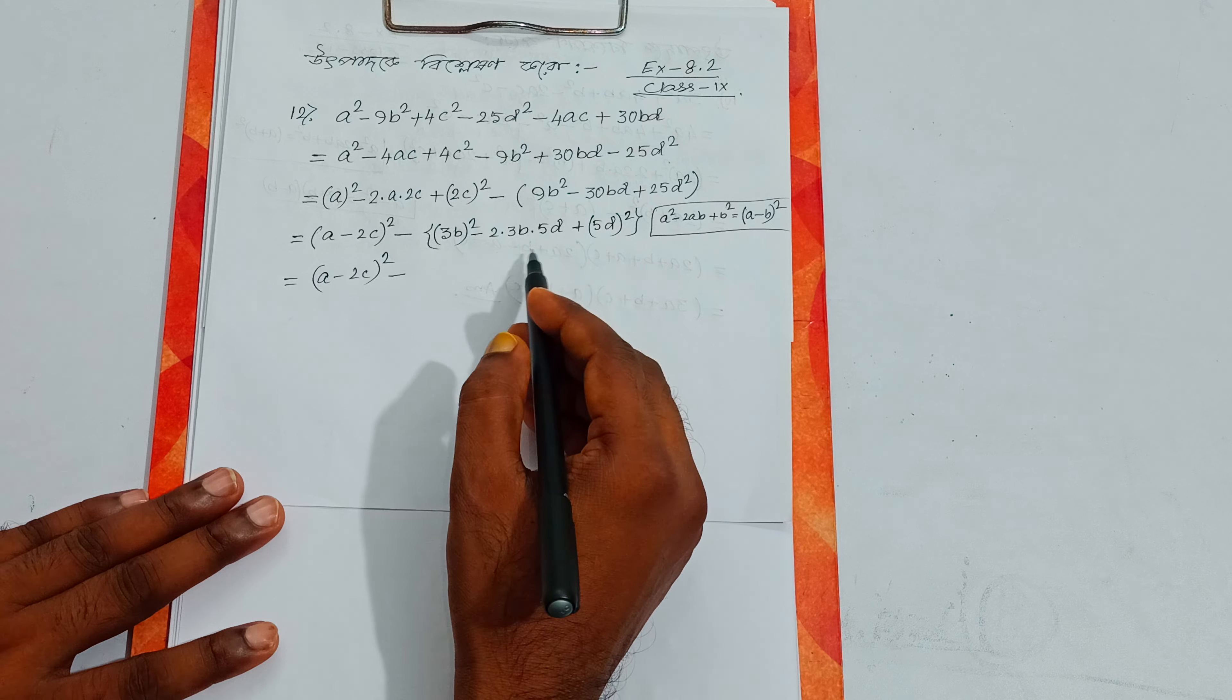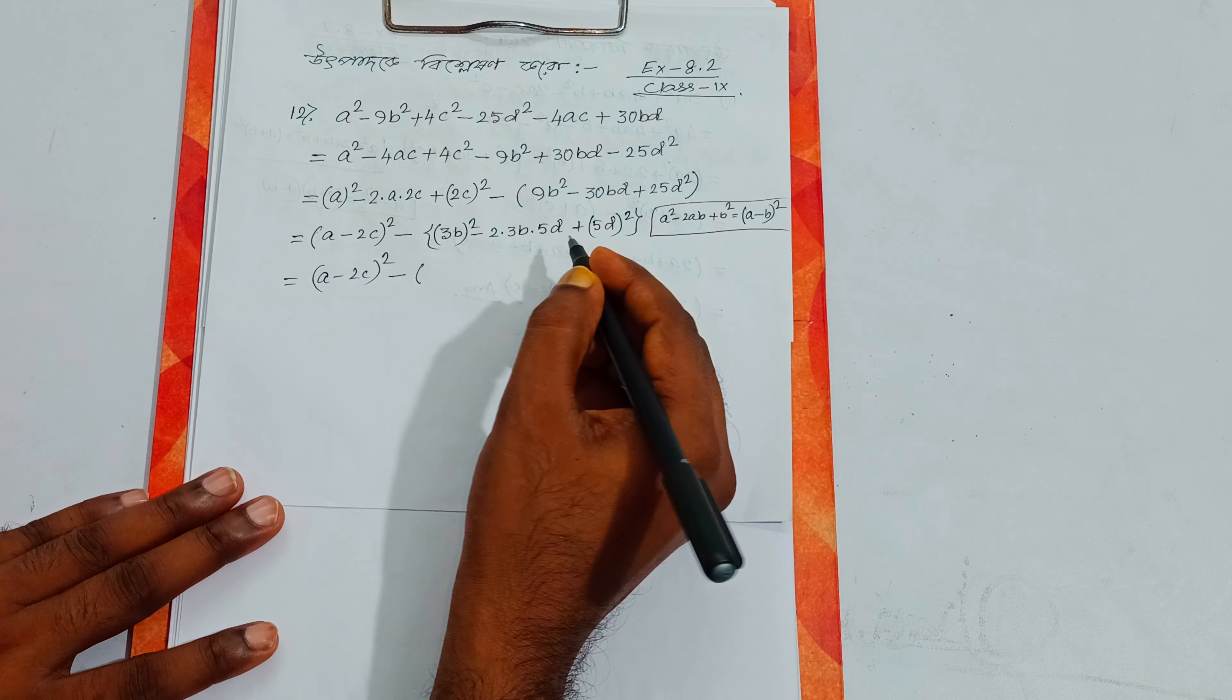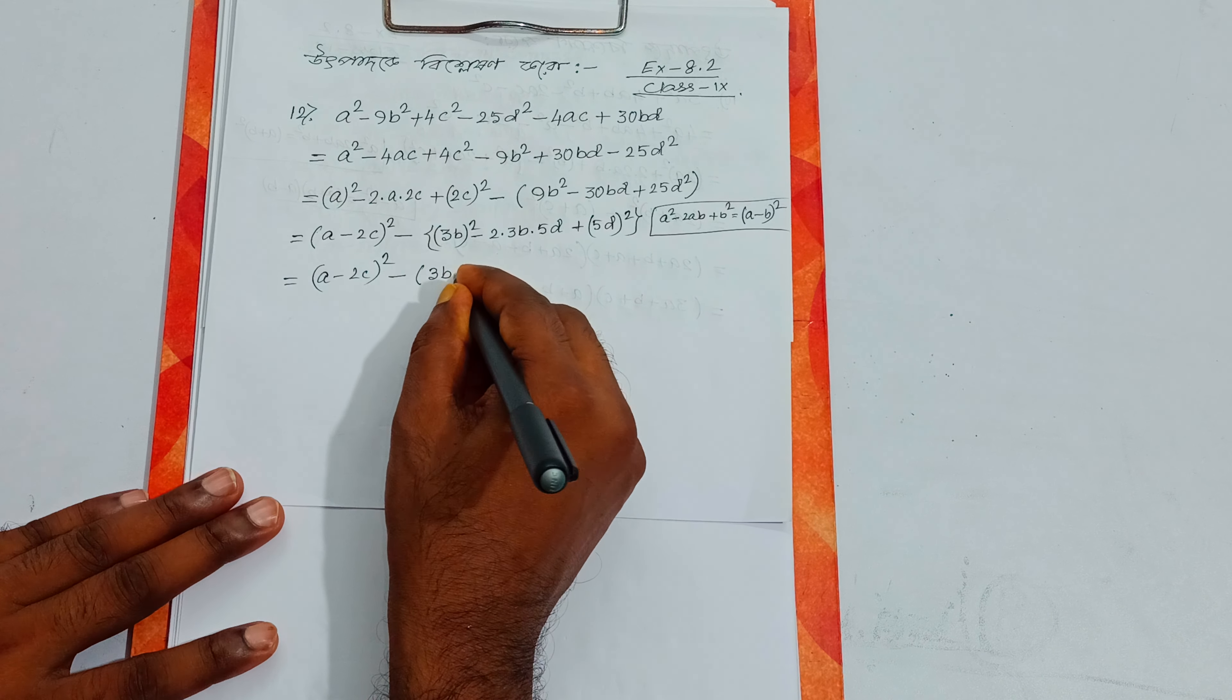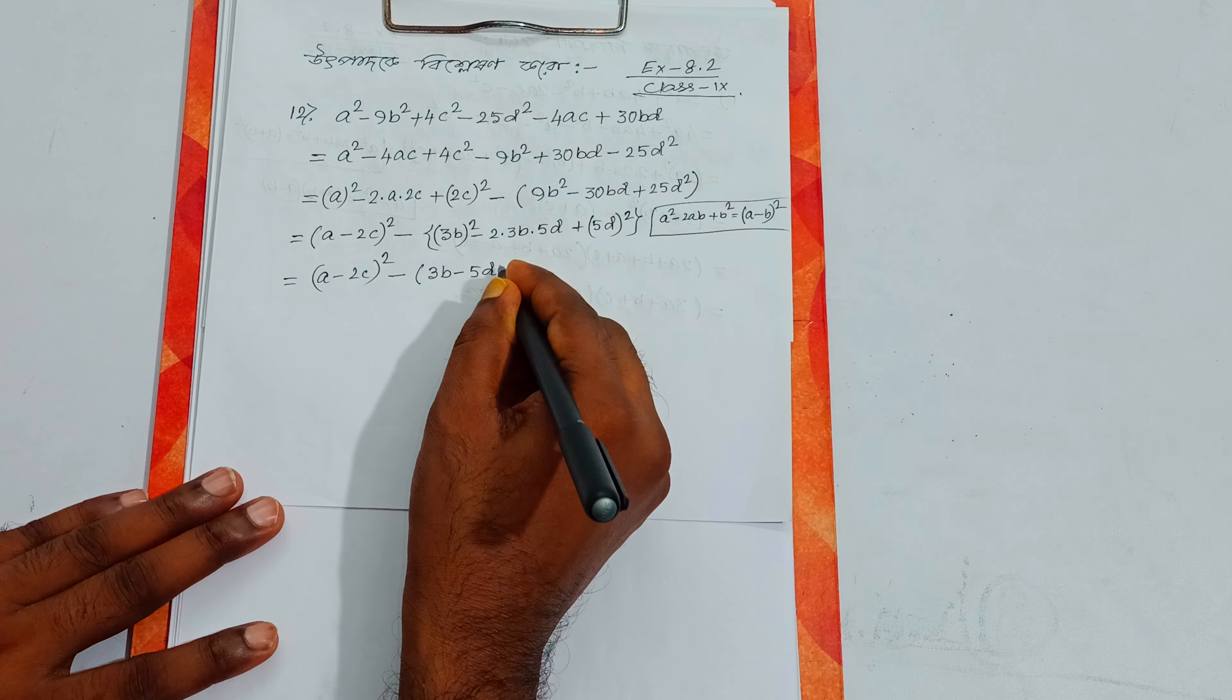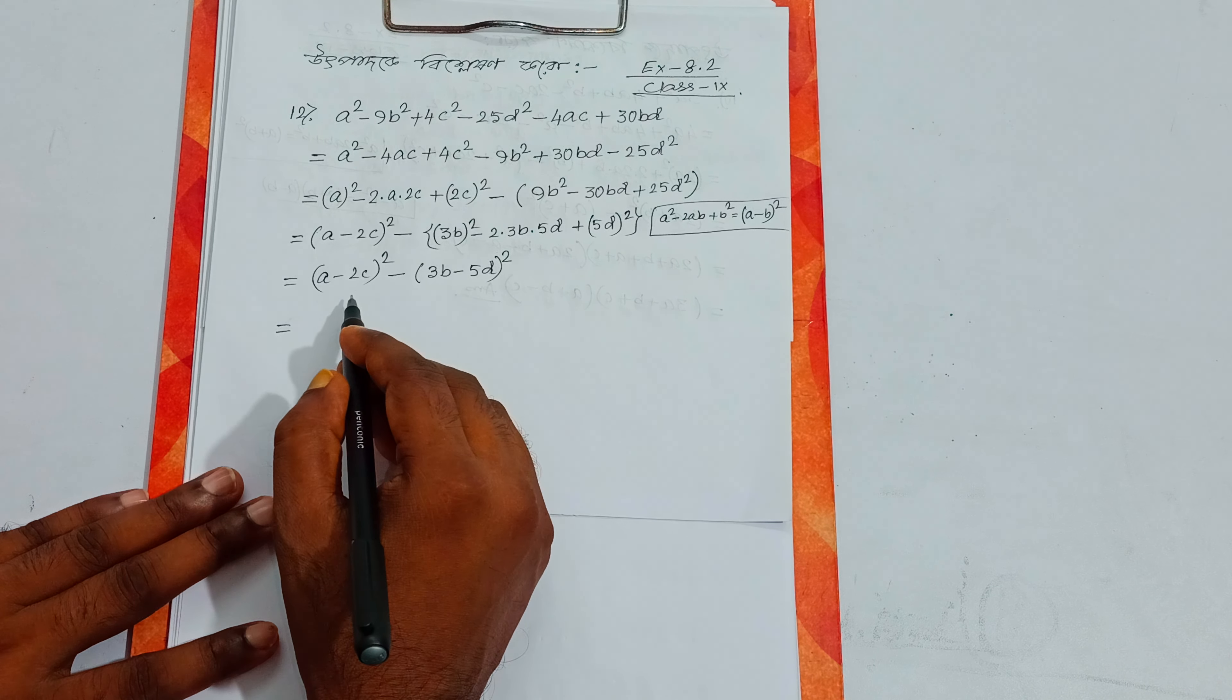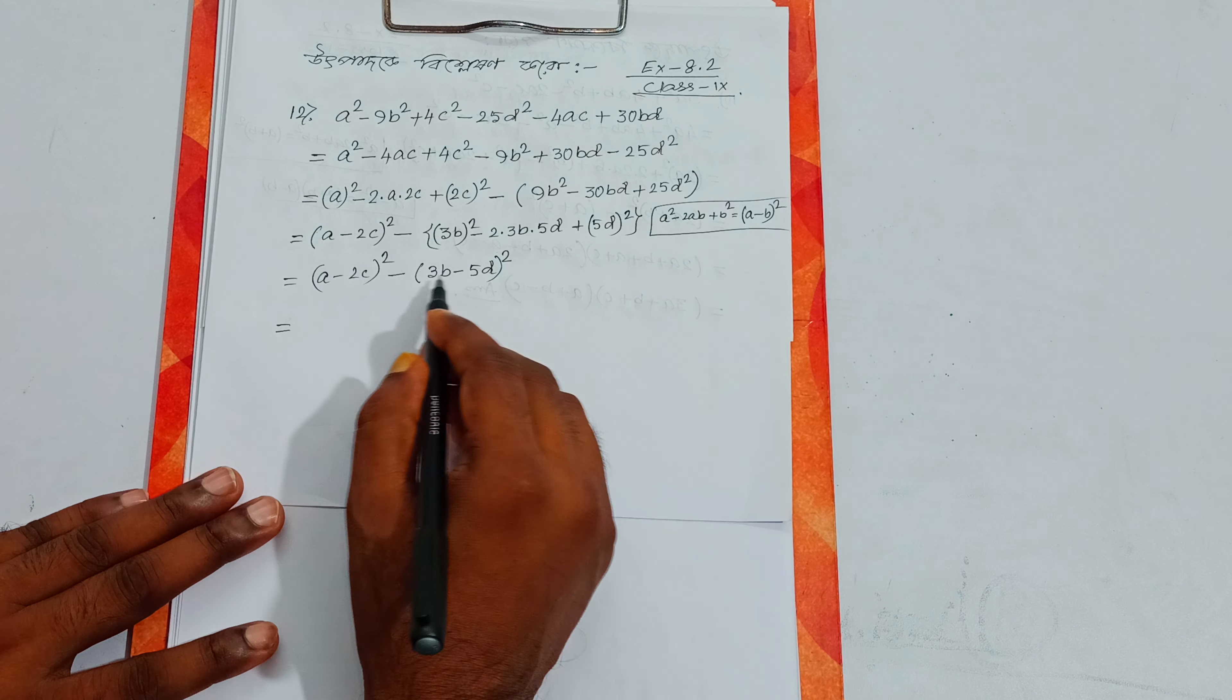Identifying the pattern: a minus b equals 3b minus 5d. So 3b minus 5d corresponds to our b term, which equals a minus b in the formula.